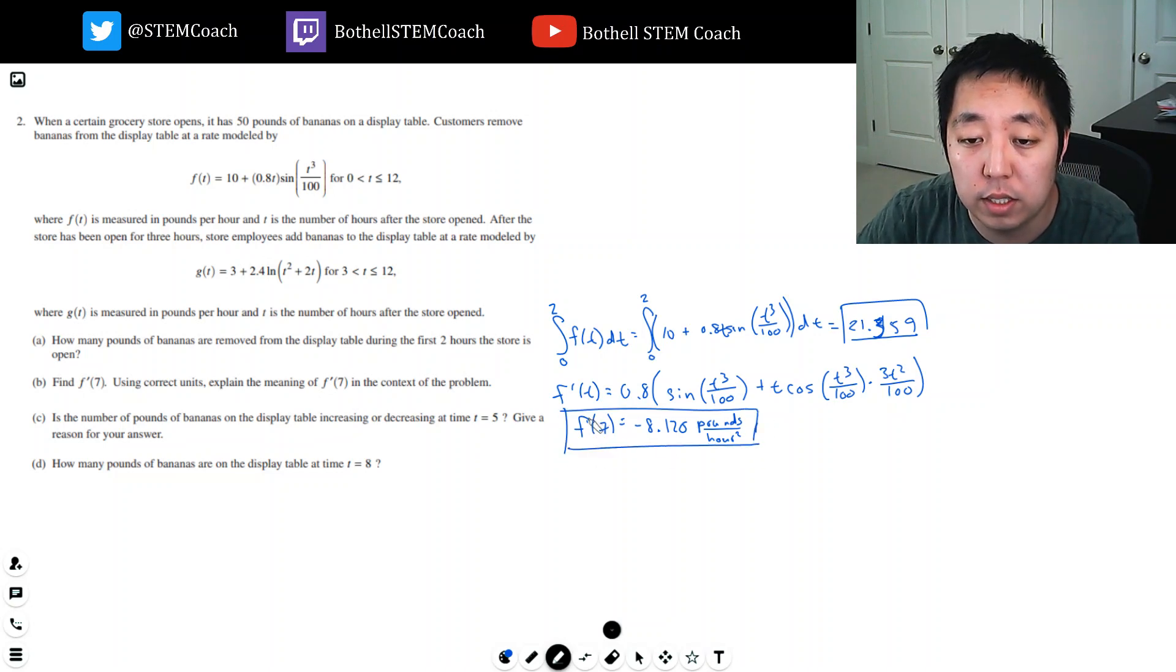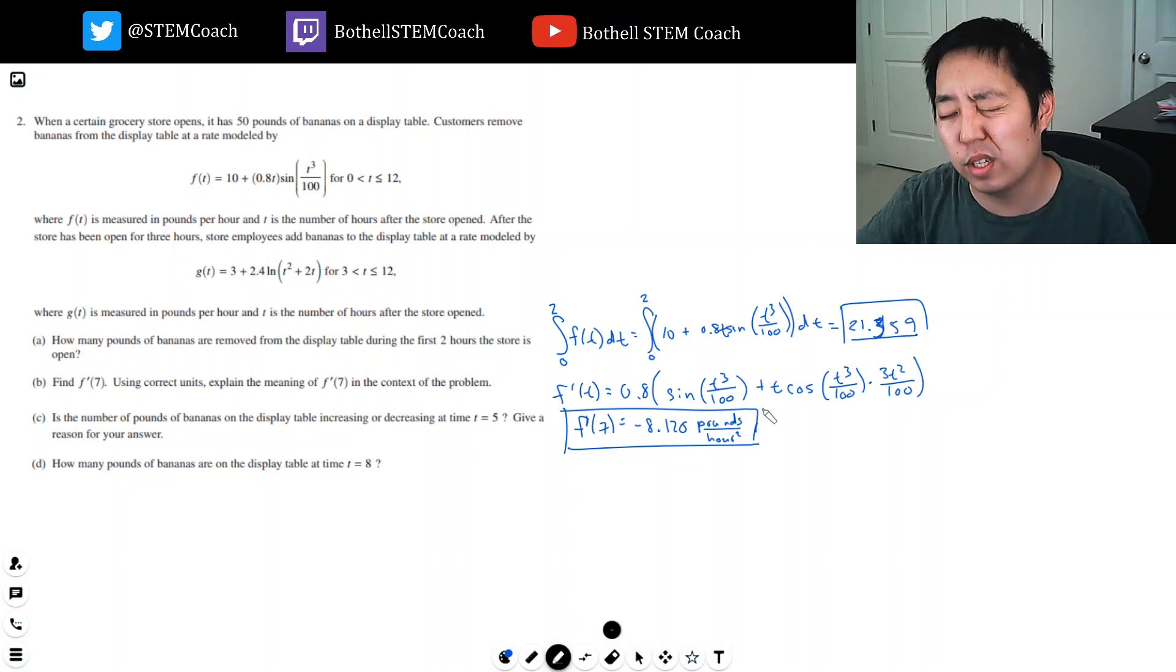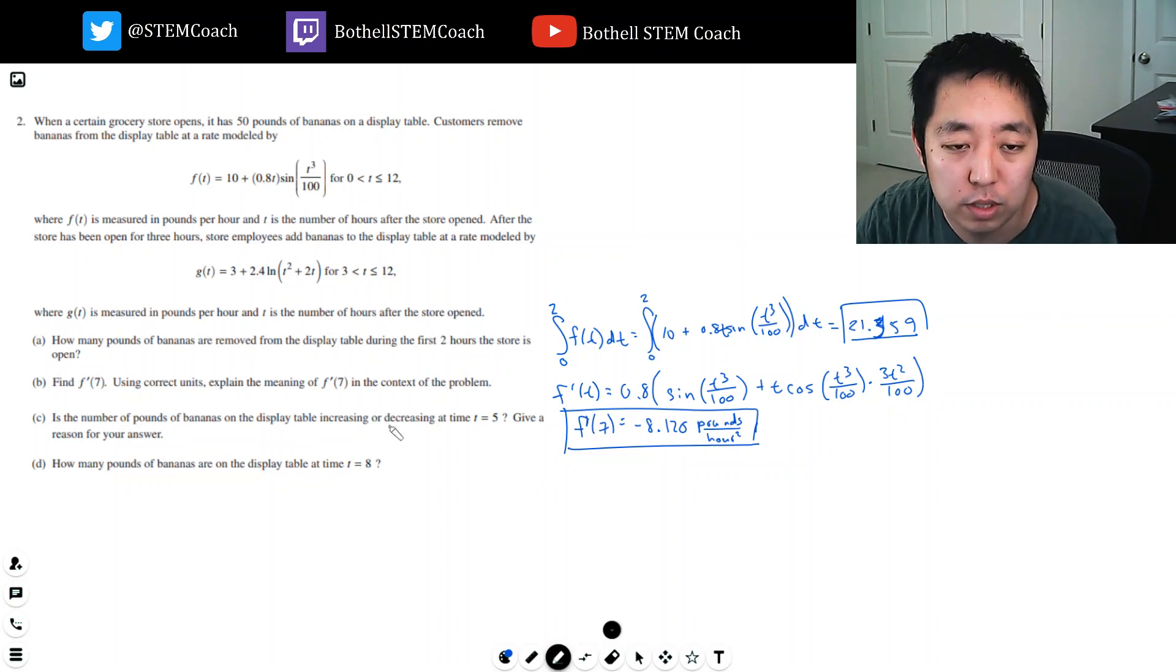This is the rate of change of the rate of change. The rate that we're taking away is some number of pounds of bananas per hour, but that's decreasing. So the rate that we're taking away bananas is decreasing. Less people are taking away bananas. They're still taking away bananas, but they're taking it away at a slower rate. You can write that out in as many words as you want to say.